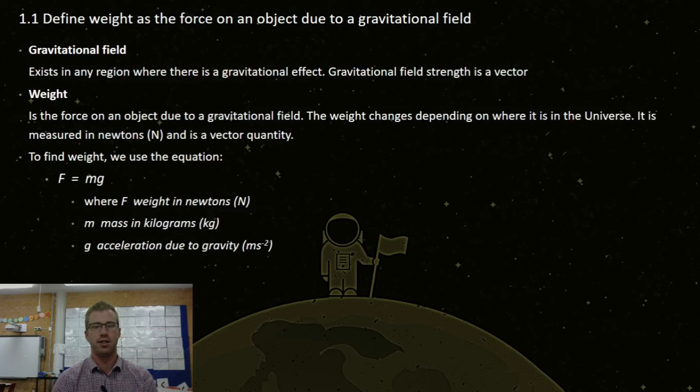Let's define the two concepts here, and we'll go first with gravitational field. It exists in any region where there is a gravitational effect. Gravitational field strength is a vector quantity, and we learned that in year 11 physics.